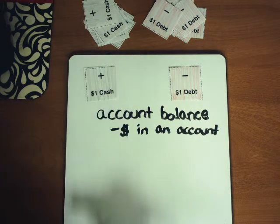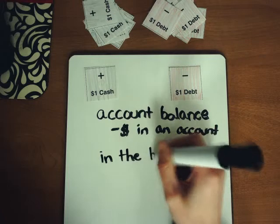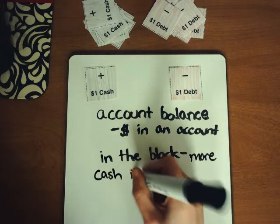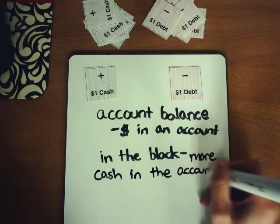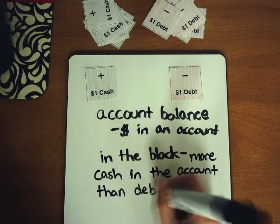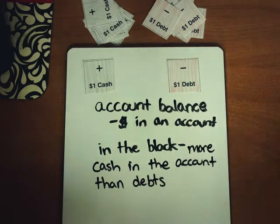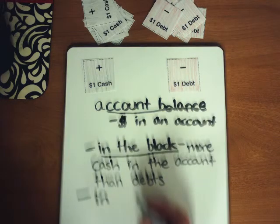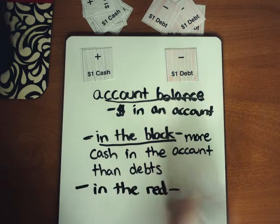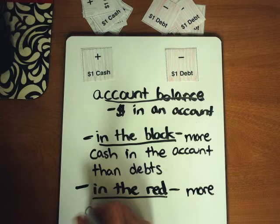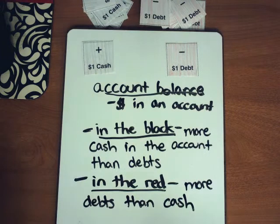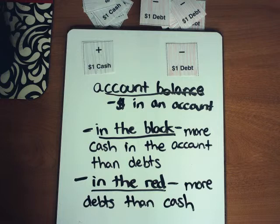And then we have cash, which are positive numbers. An account balance is said to be in the black when there's more cash in the account than debts. An account that's in the red has more debts than cash. Go ahead and pause the video right here if you need a little bit more time jotting down those different vocabulary terms we're going to be using throughout this lesson.